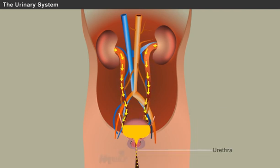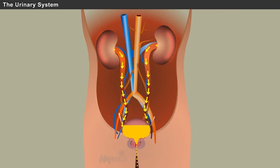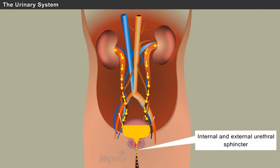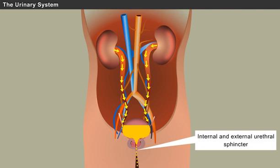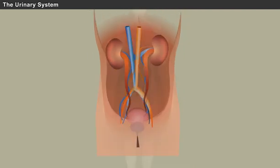The urethra is the tube through which urine passes from the bladder to the exterior of the body. The flow of urine through the urethra is controlled by the internal and external urethral sphincter muscles.